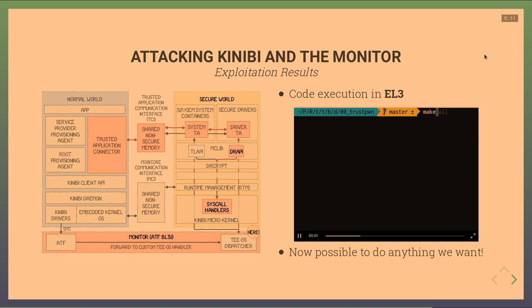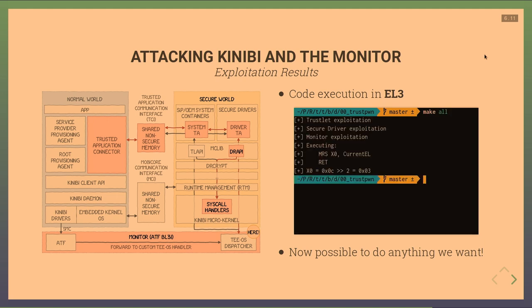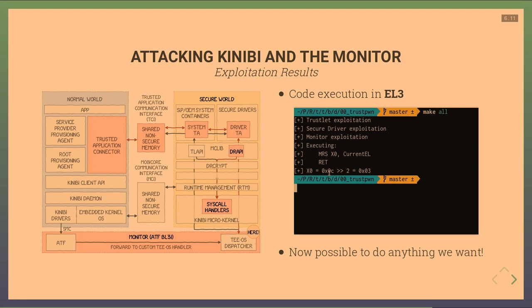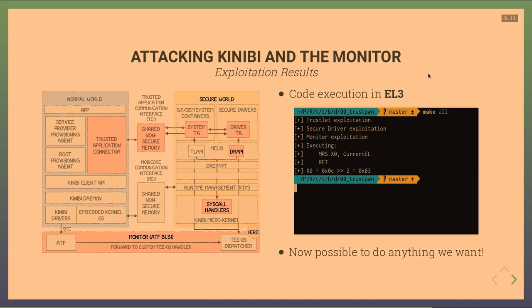A quick demo of the EL3 exploit: executing the exploit, reading the value of CurrentEL (current exception level), it returns 0xC. Since CurrentEL has its value shifted left by two bits, shifting right by two gives 3 — meaning we have code execution in EL3, effectively compromising the entire system.